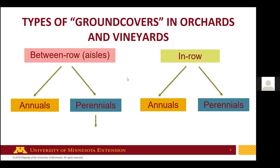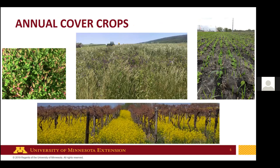There are a lot of different places in the orchard where we can plant vegetation. I want to distinguish between aisles and rows. The aisles are the between-row areas where we can grow perennials or annuals, and then we have the in-row area where we can also grow annuals or perennials. In the Midwest it's a given that we're growing a perennial in the aisles, but not all apple-growing regions do this. I won't be focusing on annual cover crops — I'm going to focus on perennial ground covers.